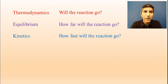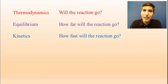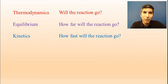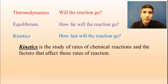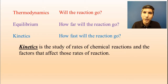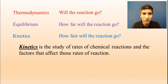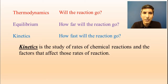Unit 5 is about kinetics, and this answers the question: how fast will the reaction go? So when we talk about chemical kinetics, we're specifically studying the rates of chemical reactions and the factors that affect those rates of reaction.